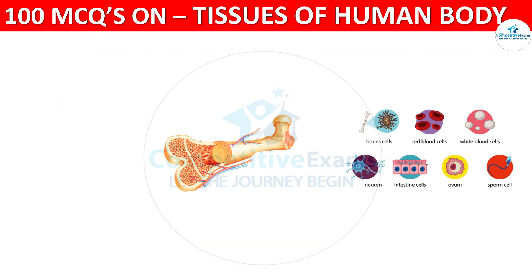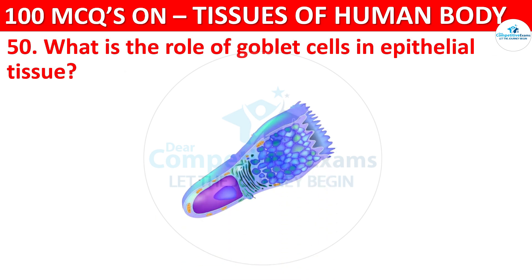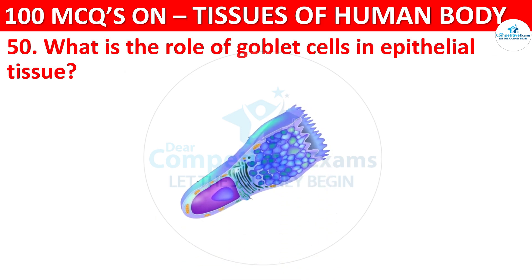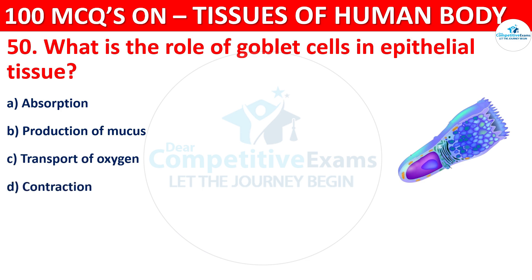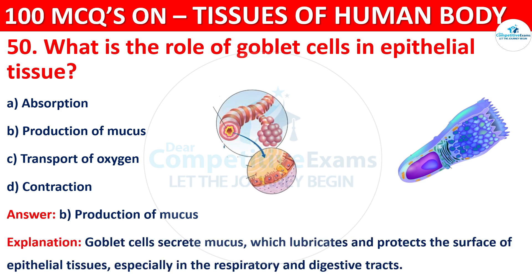Question number 50. What is the role of goblet cells in epithelial tissue? Options are Absorption, Production of Mucus, Transport of Oxygen, or Contraction. The correct answer is B, that is Production of Mucus. Goblet cells secrete mucus which lubricates and protects the surface of epithelial tissue, especially in the respiratory and digestive tracts.